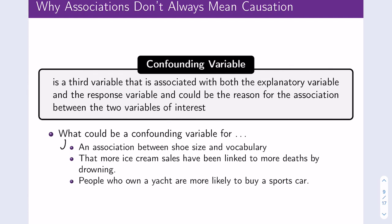The second scenario: more ice cream sales have been linked to more deaths by drowning. When do you eat ice cream the most? Probably during the summer. When are you swimming the most? Probably during the summer. So the third variable — the confounding variable — could be time of year.